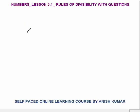For example, 6. A number is divisible by 6 when the number is divisible by both 2 and 3. If the number is divisible by both 2 and 3, then only the number is divisible by 6.